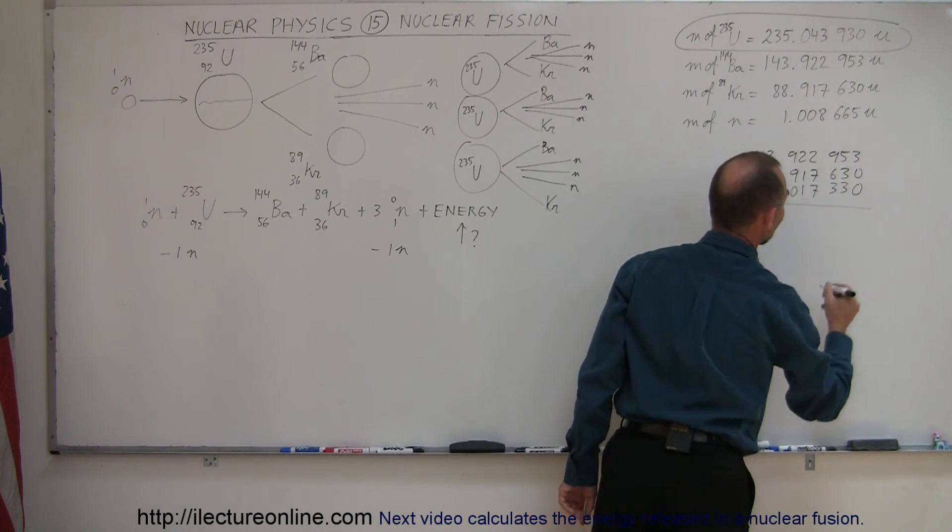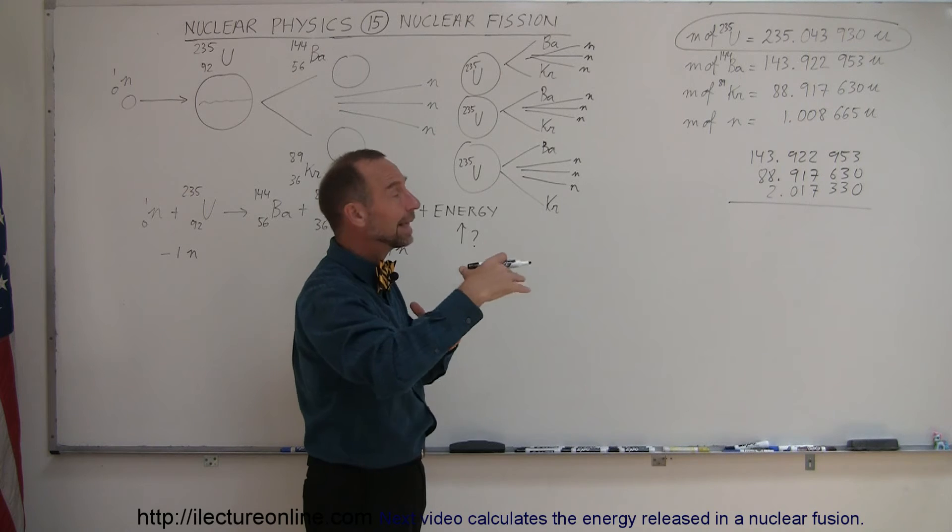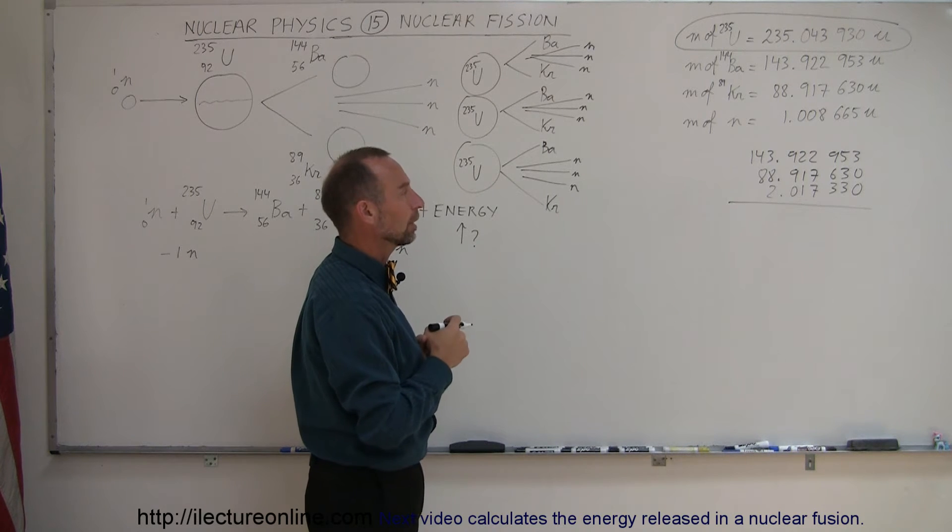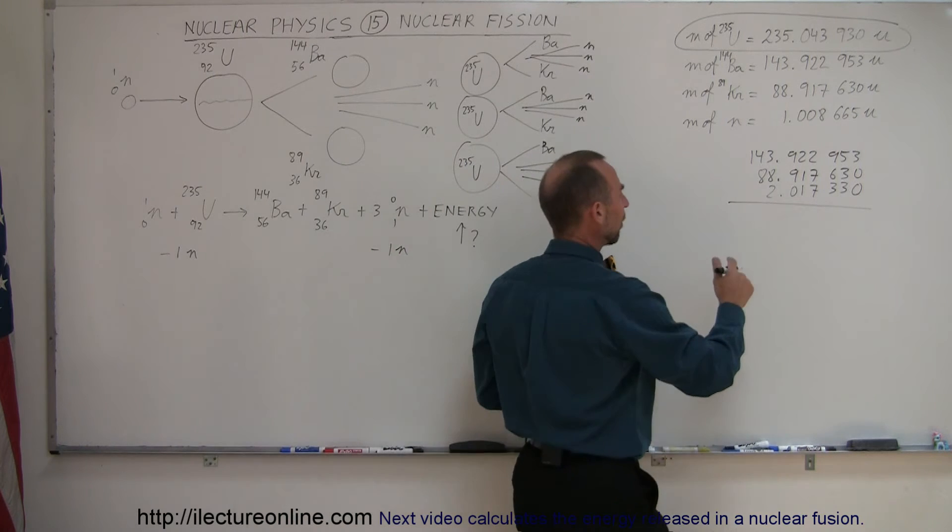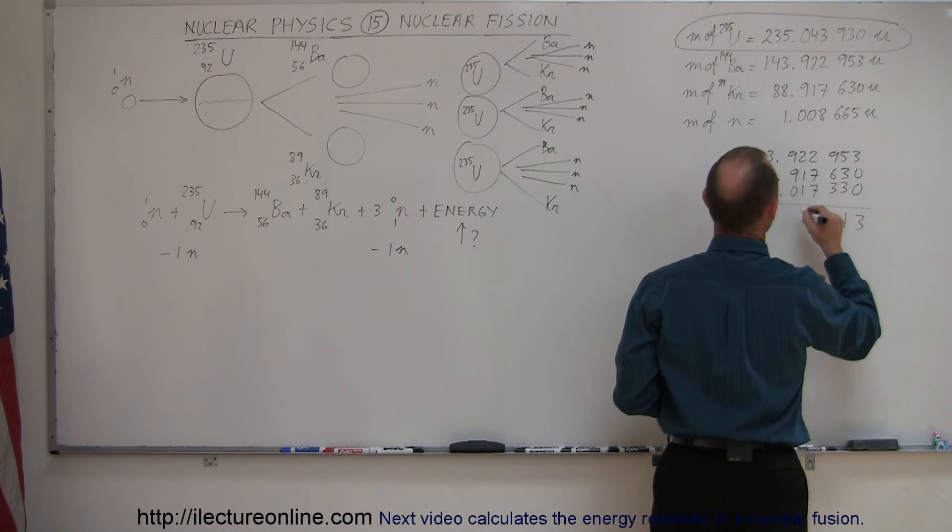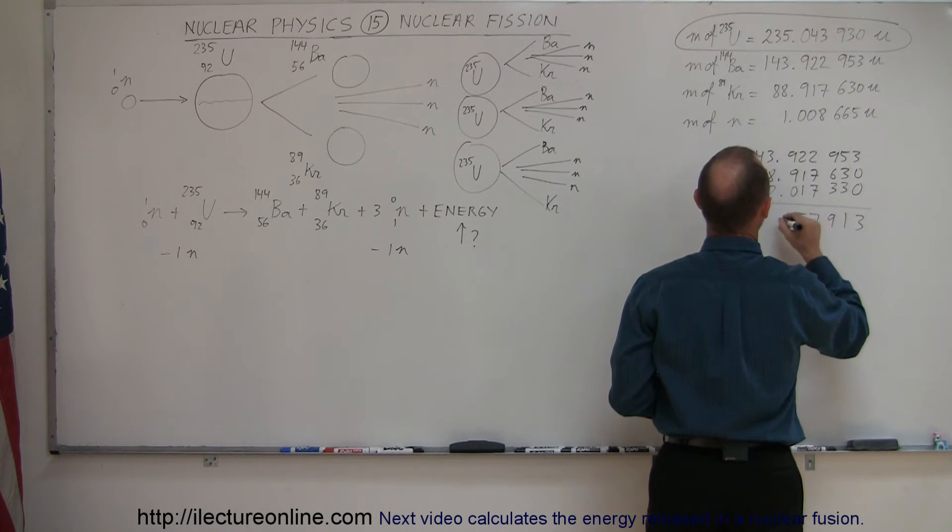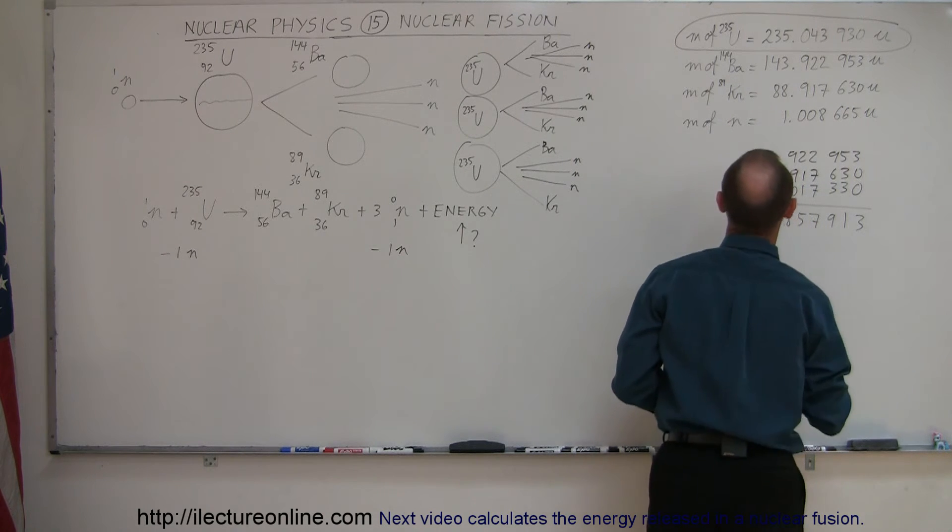Now, these are not the typical ones that you find in nature because they're very unstable, and they very quickly on their own decay to smaller nuclei as well, but we're not going to talk about that right now. So, let's add these up. The total is 234.857913.